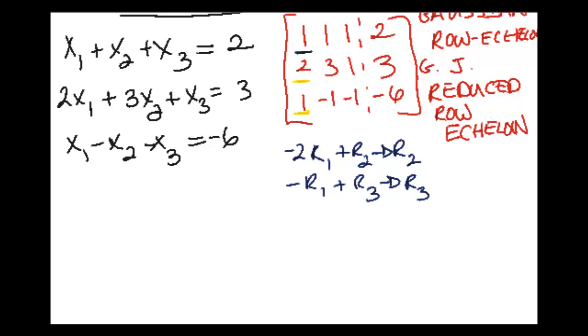Once I do that, my new matrix that results would be this one here. The top row won't change at all, so I get 1, 1, 1, 2. And then if I were to do the row operations, the next row would become 0, 1, -1, -1, and then 0, -2, -3, -8.